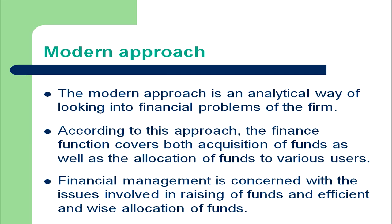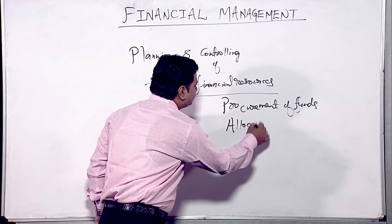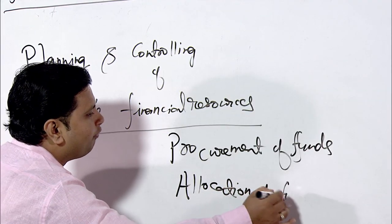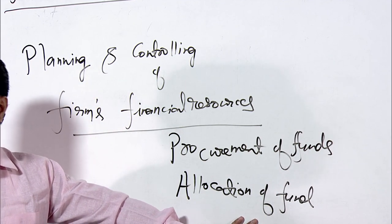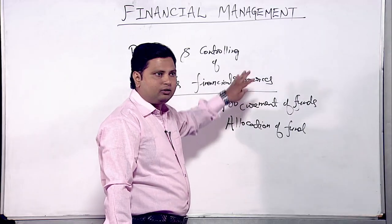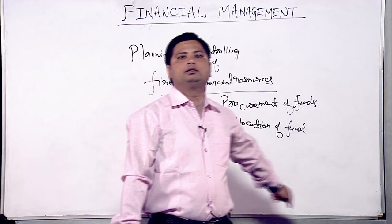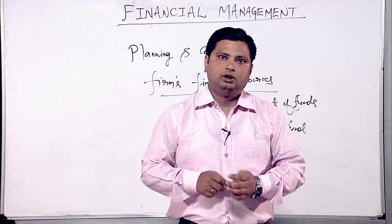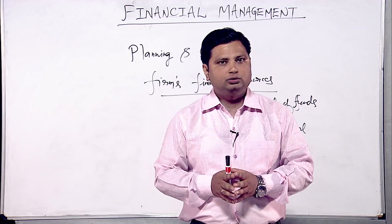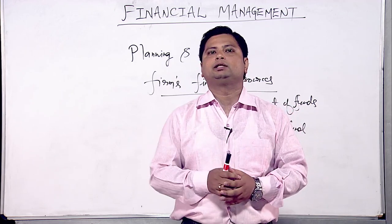The modern approach states that the finance function covers both acquisition of funds as well as the allocation of funds to various uses. Financial management under the modern approach is concerned with the issues involved in raising of funds and their efficient and wise allocation. This is the core of the modern approach and the scope of financial management.